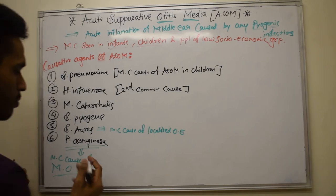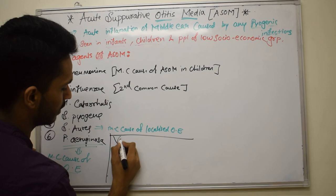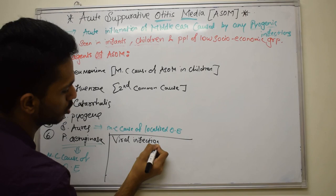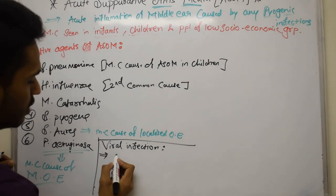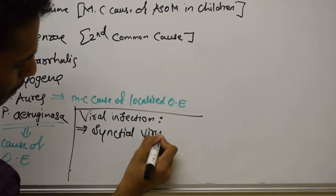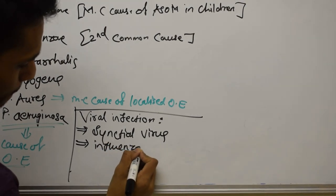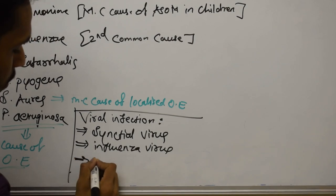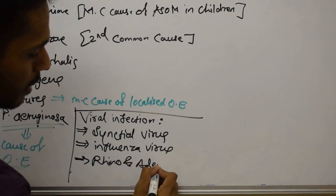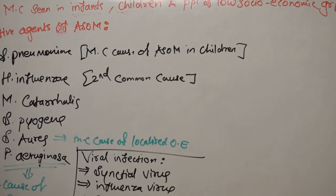We also have some viruses responsible for ASOM. These include respiratory syncytial virus, influenza virus, rhinovirus, and adenovirus. So these are the causative agents for ASOM. Streptococcus pneumoniae is the most common cause, and Haemophilus influenzae is the second most common cause.